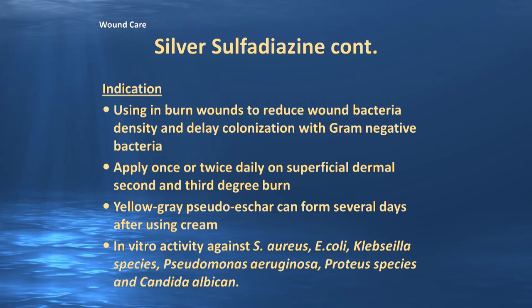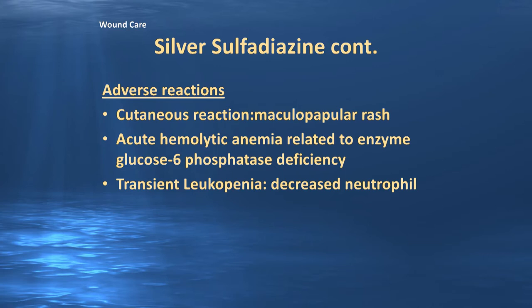The indication for Silvadene is to reduce wound bacterial density and delay colonization with gram-negative bacteria. Apply it once or twice daily — usually twice daily — on superficial, dermal, second, and third-degree burns. Be aware that a yellow-gray pseudo-eschar can form several days after use, making aggressive wound cleaning especially important. Silvadene has in vitro activity against Staph aureus, E. coli, Klebsiella species, Pseudomonas aeruginosa, Proteus species, and some action against Candida albicans. Adverse reactions include a maculopapular cutaneous rash, acute hemolytic anemia related to glucose-6-phosphatase deficiency, and transient leukopenia with decreased neutrophil counts.